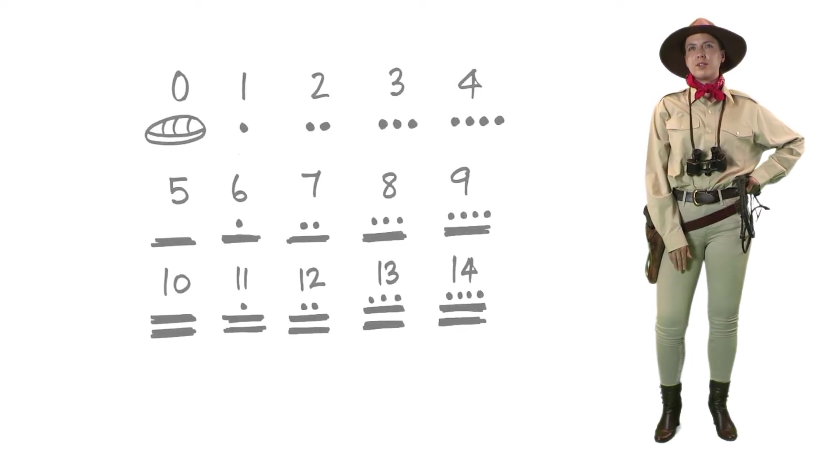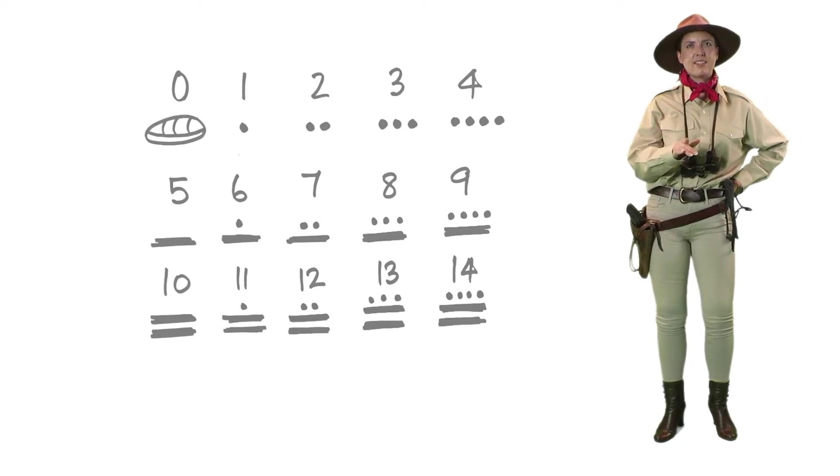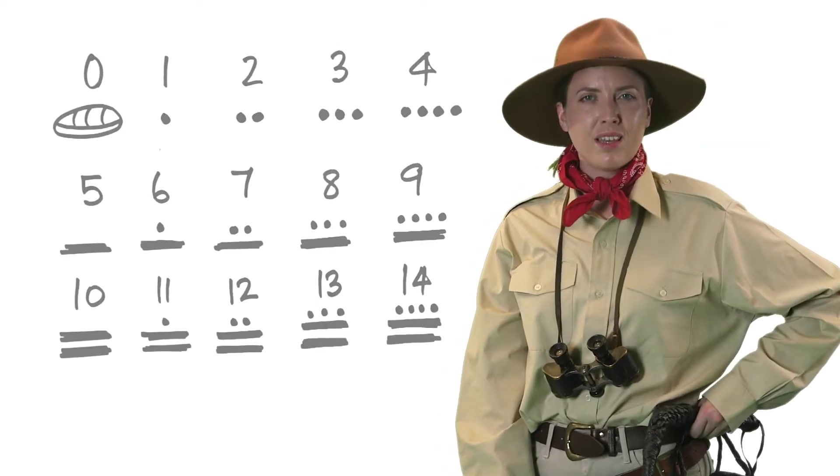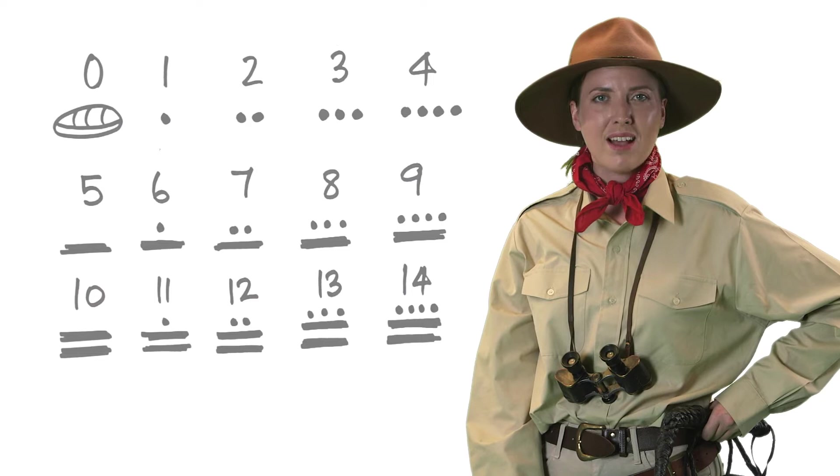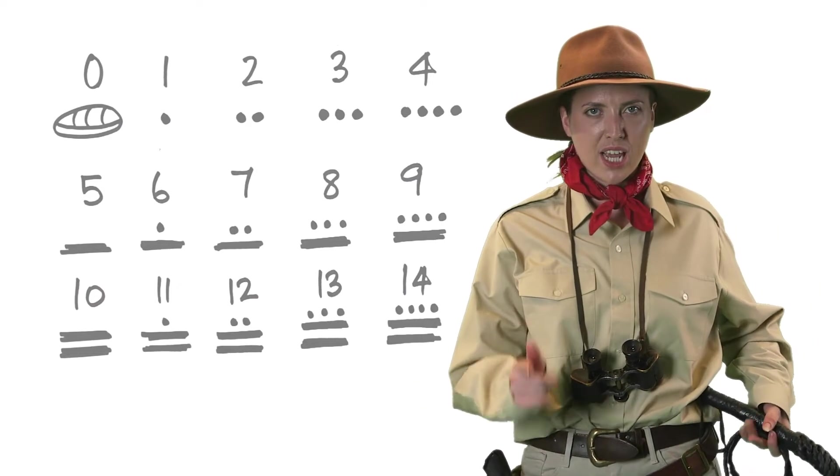Our modern numbering system is based on 10, but the Maya system of counting is based on 20. And we think this is because they counted on their hands and their feet as well. So 10 fingers and 10 toes makes 20.